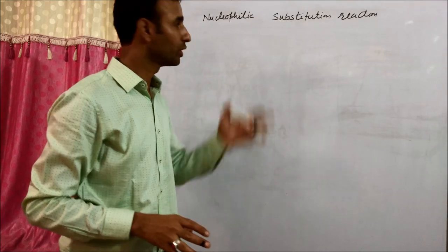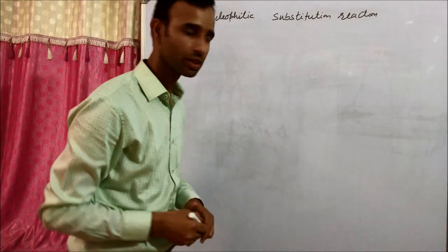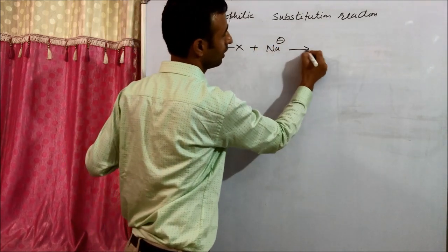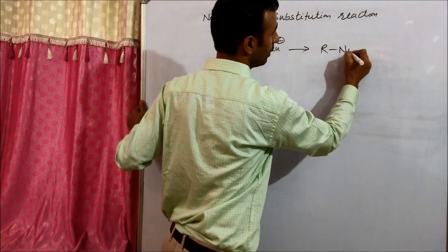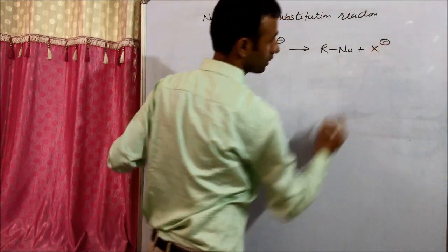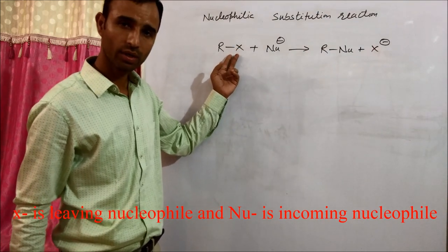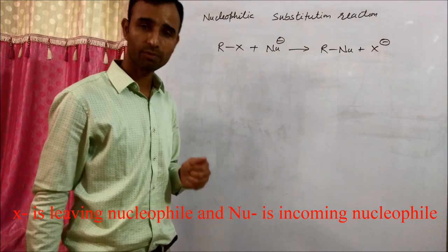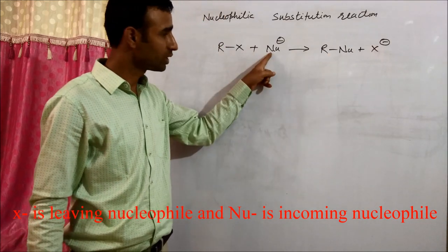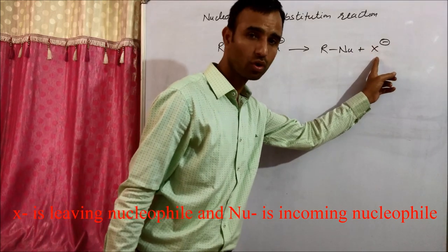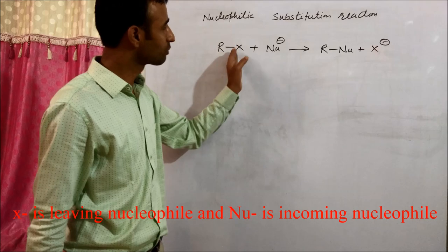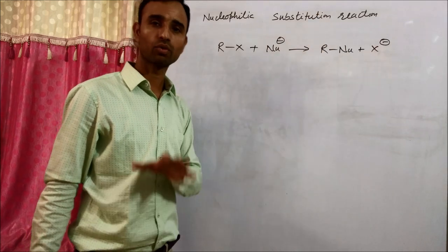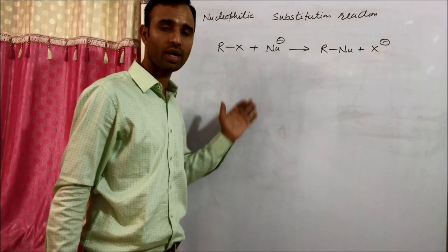Today's topic is nucleophilic substitution reaction. Let us take an example of alkyl halide. Alkyl halide reacts with a nucleophile to give a product. Breaking of the C–X bond and making of the C–nucleophile bond takes place in nucleophilic substitution reaction. One nucleophile is substituted by another — that is called nucleophilic substitution reaction. It is of two types: SN1 and SN2.